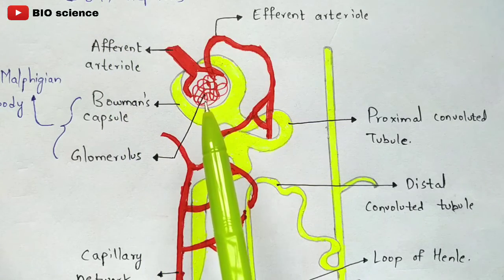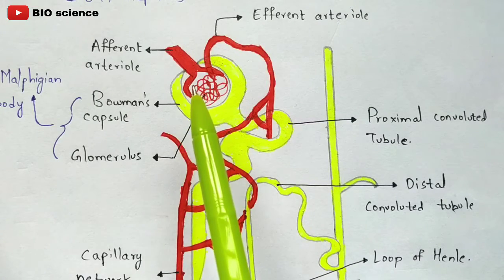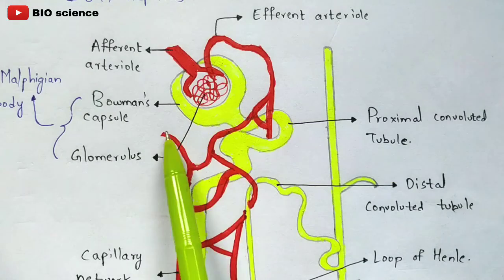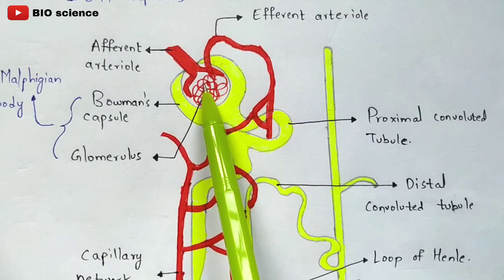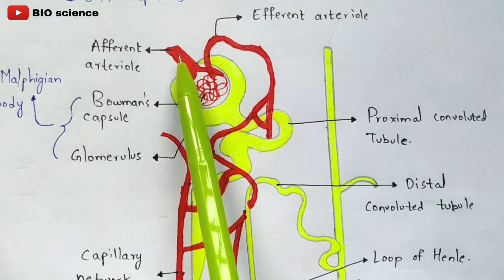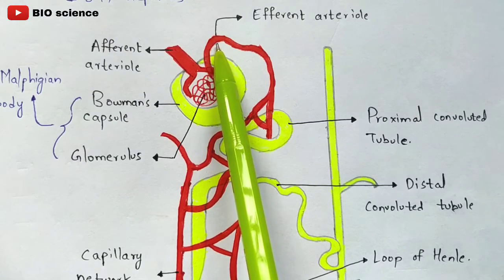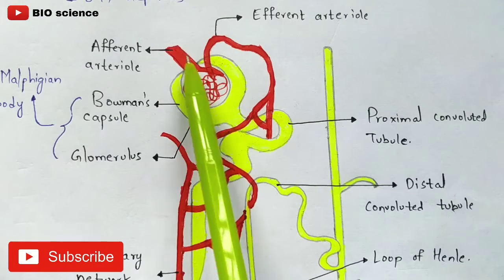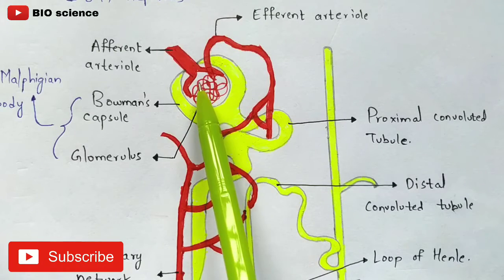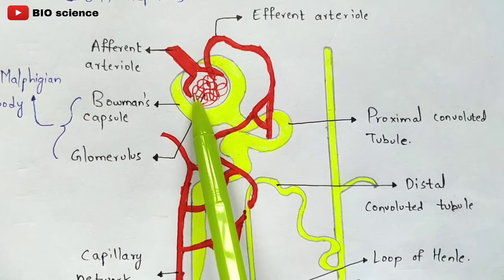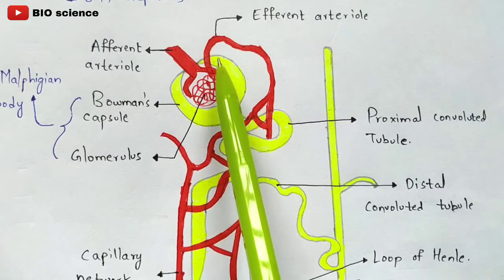The main function of the nephron is filtration of blood. Blood enters from the afferent arteriole into the Bowman's capsule, which contains the glomerulus, and here maximum filtration is done. Because the afferent arteriole is very broad, more blood enters into the Bowman's capsule. Since the same amount cannot exit through the narrow efferent arteriole, the pressure inside the Bowman's capsule gradually increases.